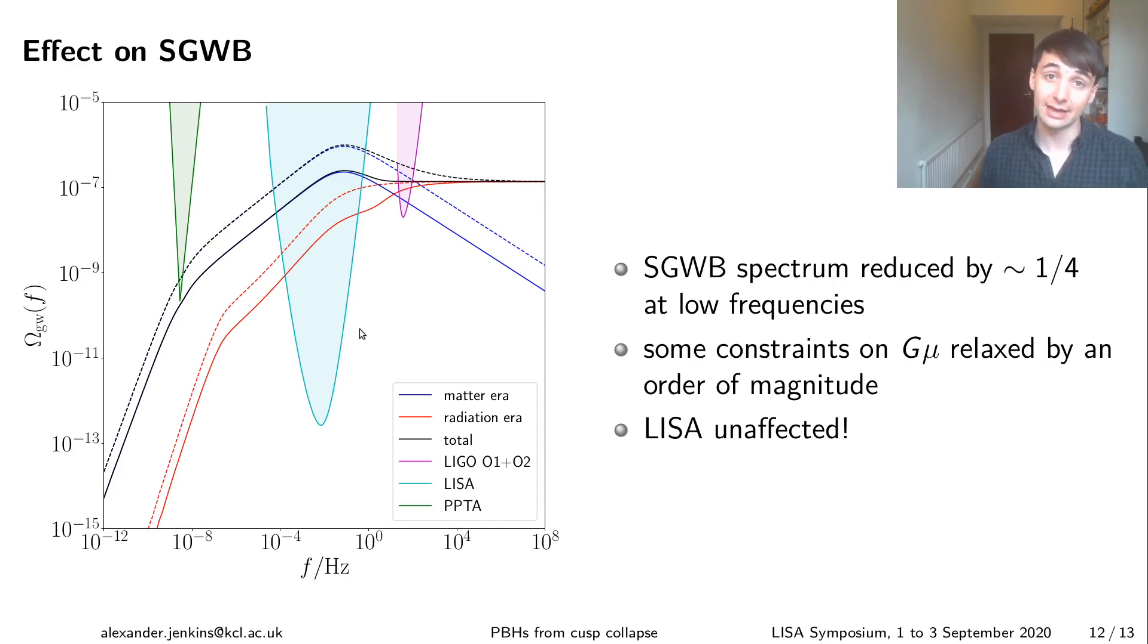This means that the effects of this on different stochastic background measurements for different frequency bands changes. So for example for pulsar timing arrays they're sitting in this regime where the stochastic background spectrum is reduced so the constraints on Gμ that we get from them are weakened by something like half an order of magnitude. However for LISA, LISA is sensitive to such small values of Gμ and this kind of crossover regime moves to lower and lower frequencies as you decrease Gμ. So actually for LISA because it can probe down to about Gμ 10^-17 we see no difference at all. So which is good news because it means that when LISA flies it will have just as much constraining power for cosmic string models as it did before.